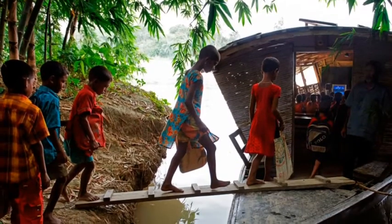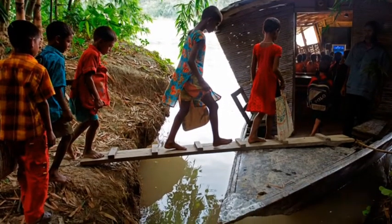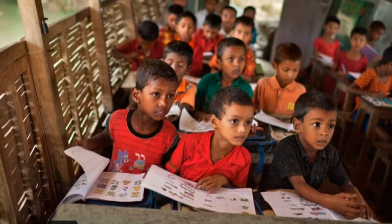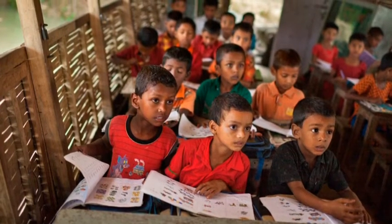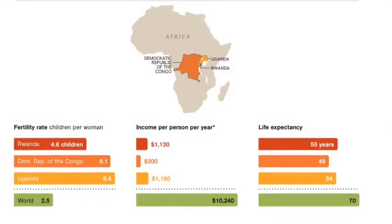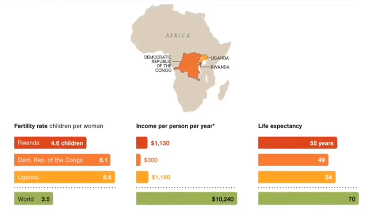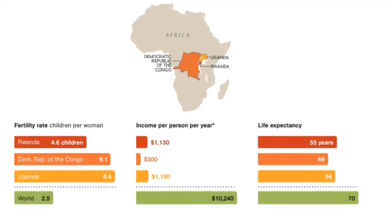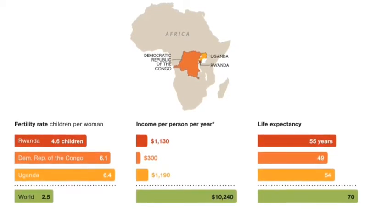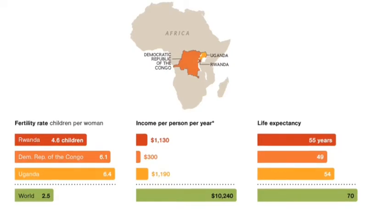Education is an issue that is often overlooked when dealing with overpopulation. Many of the contributing factors that have caused the overpopulation problem would be solved through education. In LDCs, such as those in Sub-Saharan Africa, where the issue of overpopulation is most rampant, many factors are positively affected, including a drop in both birth rate and fertility rate, as well as an increase in life expectancy.